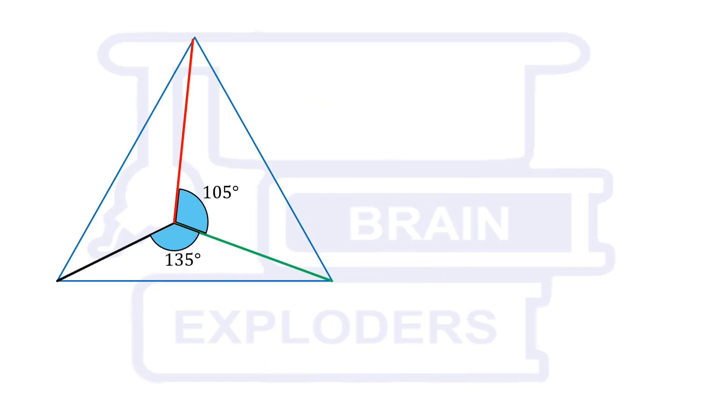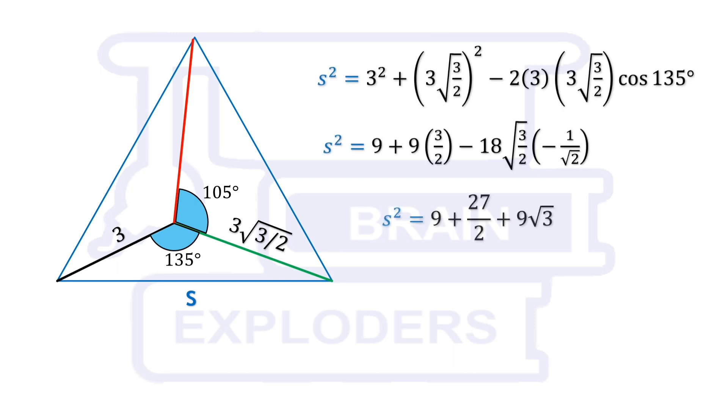Now applying Al-Kashi's law of cosines in the triangle formed by black, green and blue line, we find that side length of the equilateral triangle is 3 by 2 times root 10 plus 4 root 3.